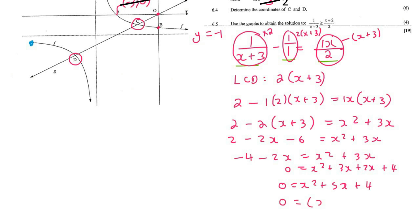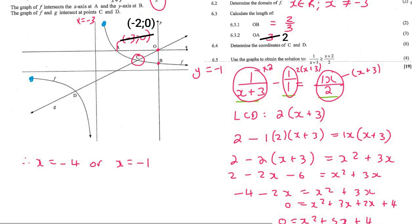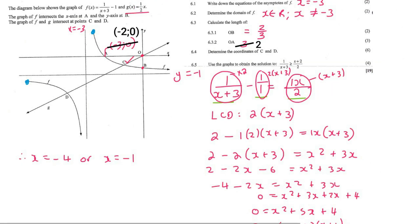This factorizes very easily as x plus 4 and x plus 1. Therefore x equals negative 4 or x equals negative 1. Be careful though — those are only the x-values. You have now found the x-value of D and the x-value of C, but you also need the y-values. To find the y-values, you plug those x-values back into either the hyperbola or the straight line, since it's the same point.